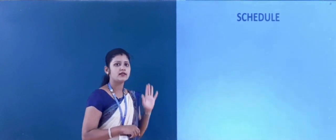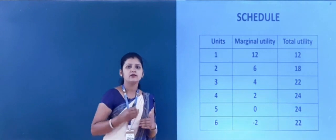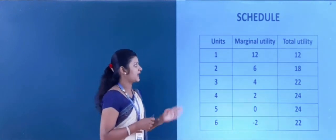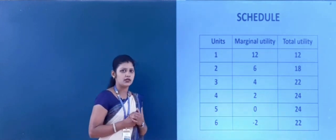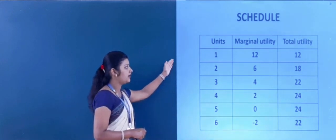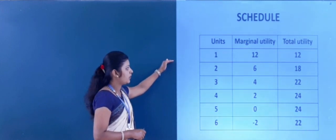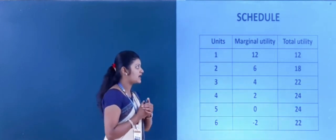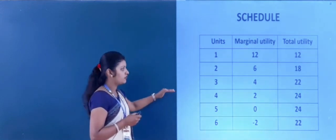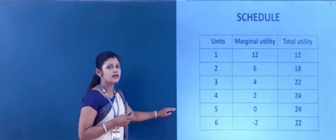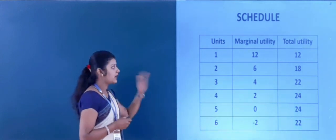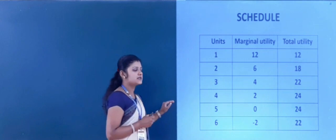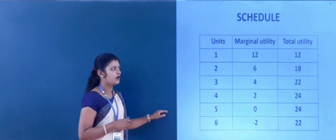Next is the schedule. This schedule will help you understand the law of diminishing marginal utility. The first column shows the units of consumption, the second is marginal utility, and the third is total utility. As the consumer goes on consuming one by one, his marginal utility goes on decreasing and finally becomes negative. Total utility at the starting stage increases, and after reaching a certain point, it will also decline.